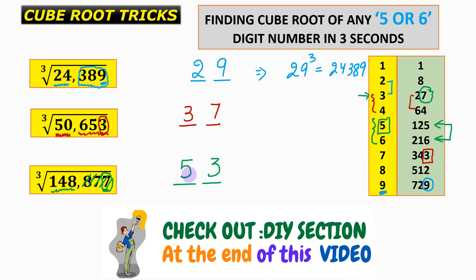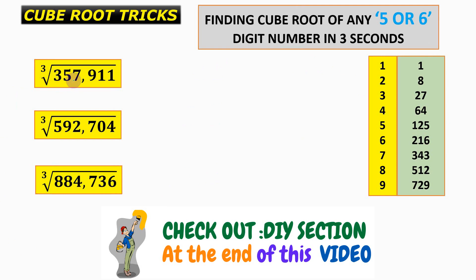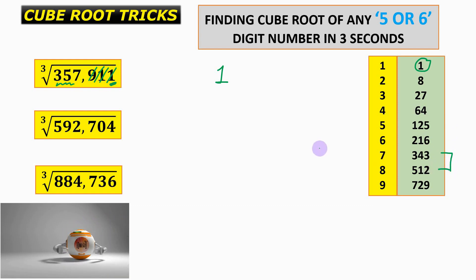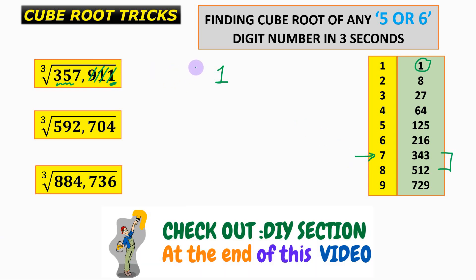For the cube root of 357,911: the unit place is 1, so the unit digit of the answer is 1. Discarding the last three digits leaves 357. Since 357 lies between 343 (7³) and 512 (8³), we pick the smaller number 7 as the tens digit, giving the answer 71. So 71³ = 357,911.